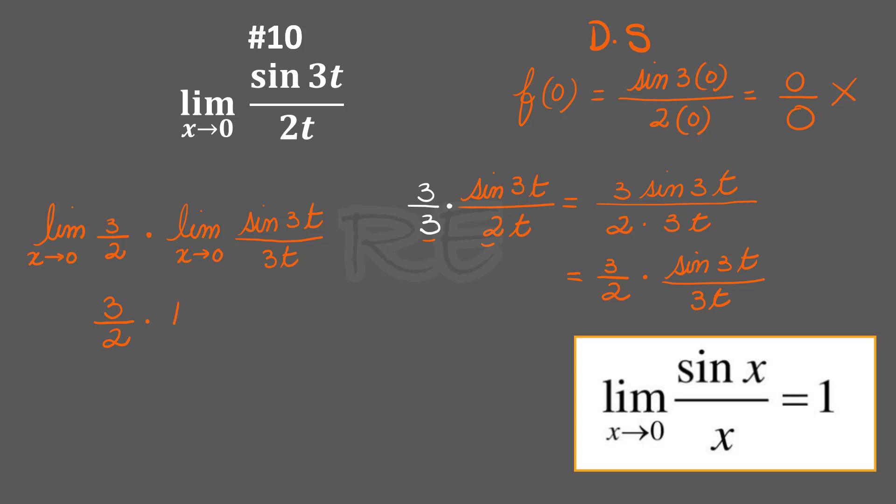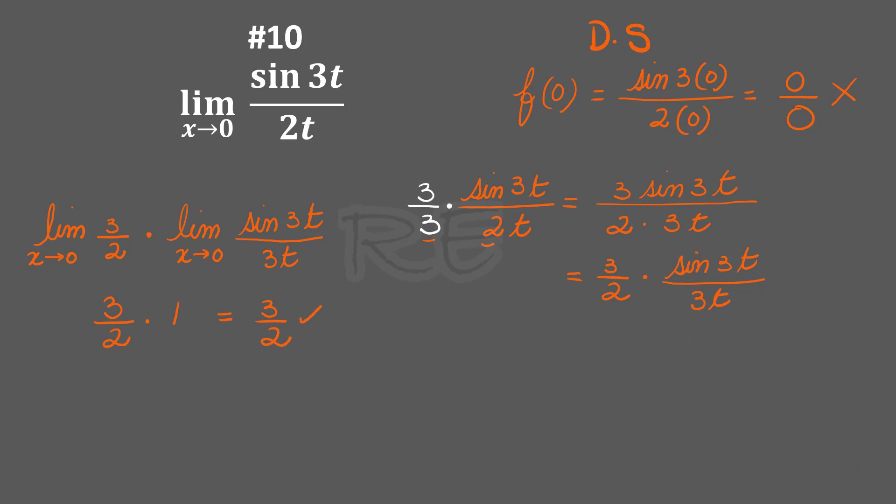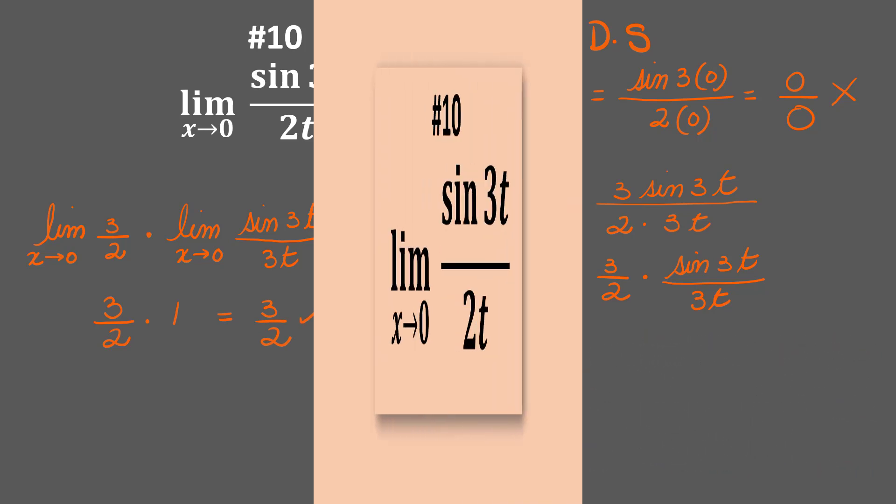the limit of sin(3t) over 3t as x approaches 0 is 1. So our final answer is 3/2.